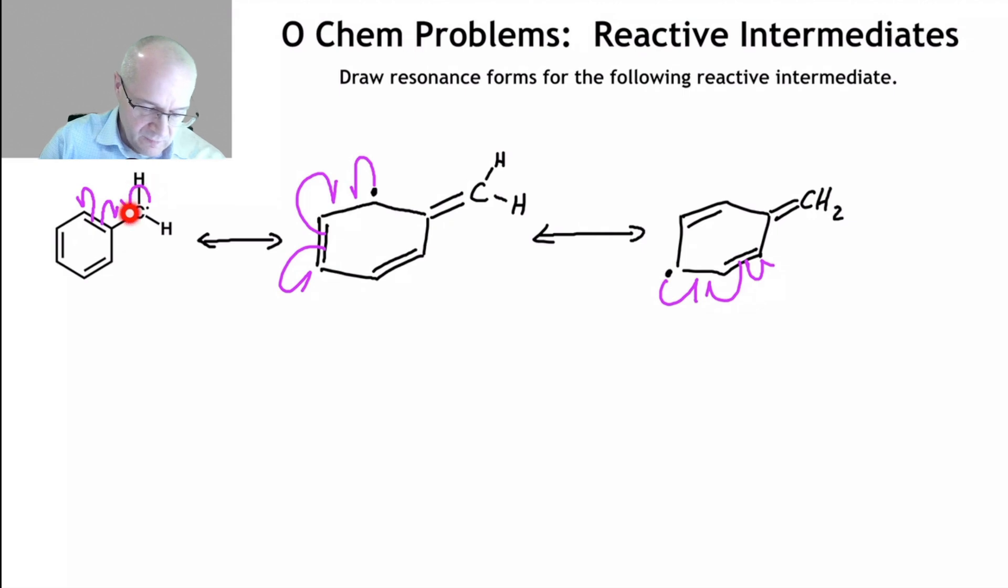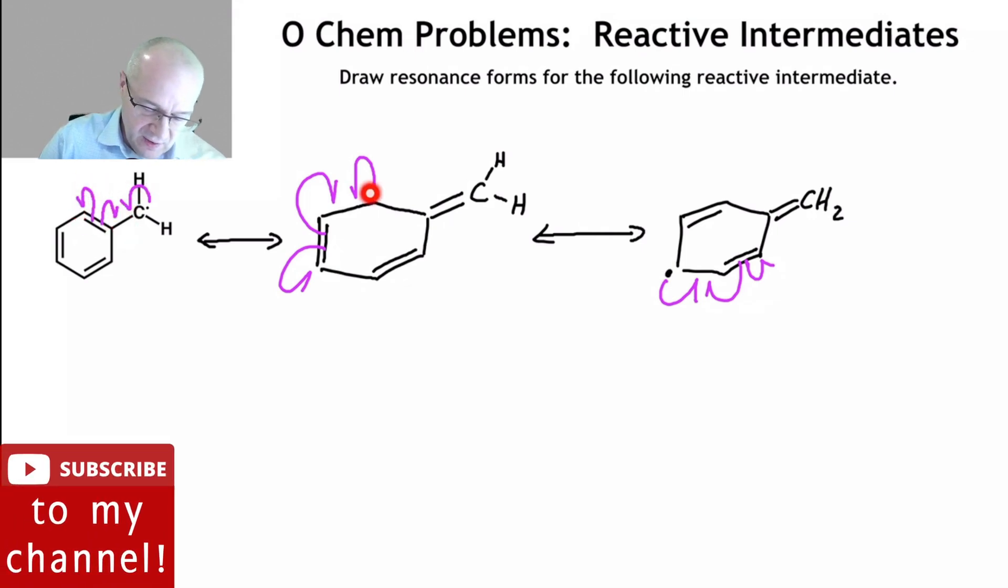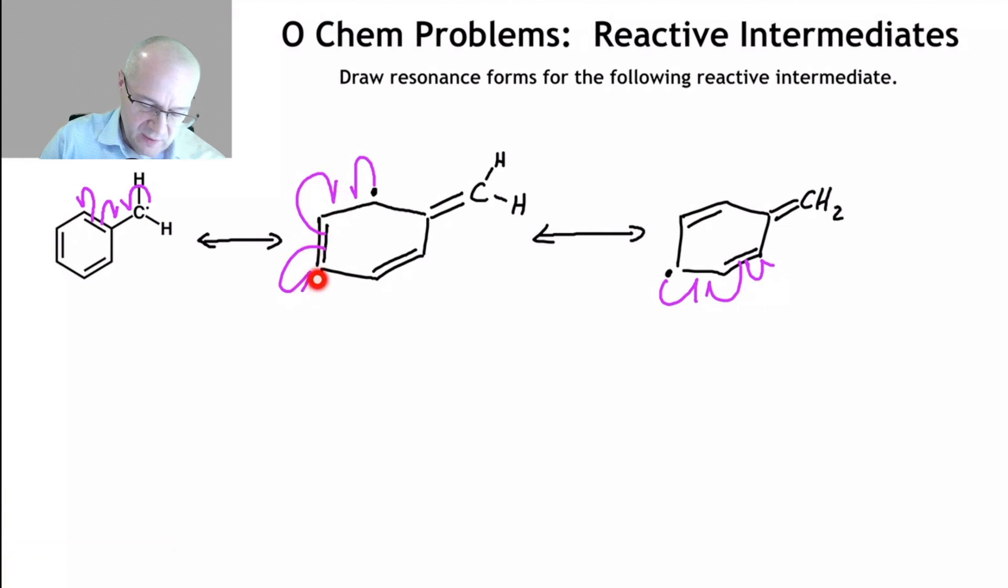Now notice the arrows. Two arrows form a bond. One arrow goes to give a single electron. Same thing here. Two arrows forming a bond. One arrow going to make a single electron. Two arrows are forming a bond. One arrow goes to making the single electron. It's the same thing over and over again.